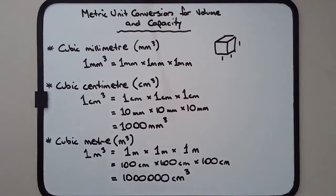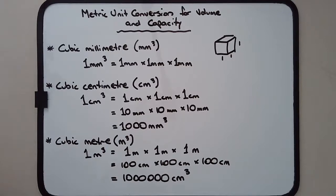Let's go through the metric unit conversion for volume and capacity. As a quick reminder, volume is the space that a three-dimensional object takes up. Think of capacity as the amount of material that a solid could contain or hold.